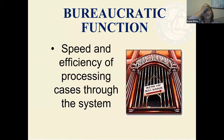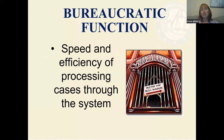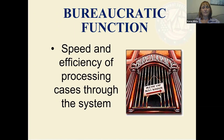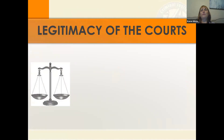The third function is the bureaucratic function. This is to make sure we have a process to actually put people through the court system — steps and a process to fairly try people and determine if they actually committed a crime. Those are all the steps in the system, which we'll be talking about next week.